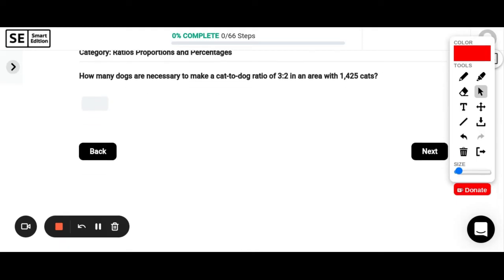How many dogs are necessary to make a cat to dog ratio of 3 to 2 in an area with 1,425 cats? So we have a ratio here of cats to dogs that is 3 to 2. And we want to know, well, what happens when there's 1,425 cats? How many dogs are there? Okay, so important to put it in order, cats first and then dogs. And I'm actually going to write these as fractions so that it's something I can solve. So 3 to 2 is the same thing as 3 over 2. And that needs to be equal to 1,425 over something, over x.